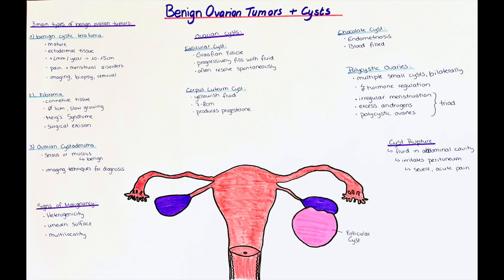The next type is called a chocolate cyst. This type is due to endometriosis lesions in the ovary. As during the normal progression of the menstrual cycle bleeding occurs, the endometriosis lesions also bleed, and this blood collects in cysts where the lesions are found. The cysts are called chocolate cysts due to the brownish appearance of the blood inside the cyst cavity.